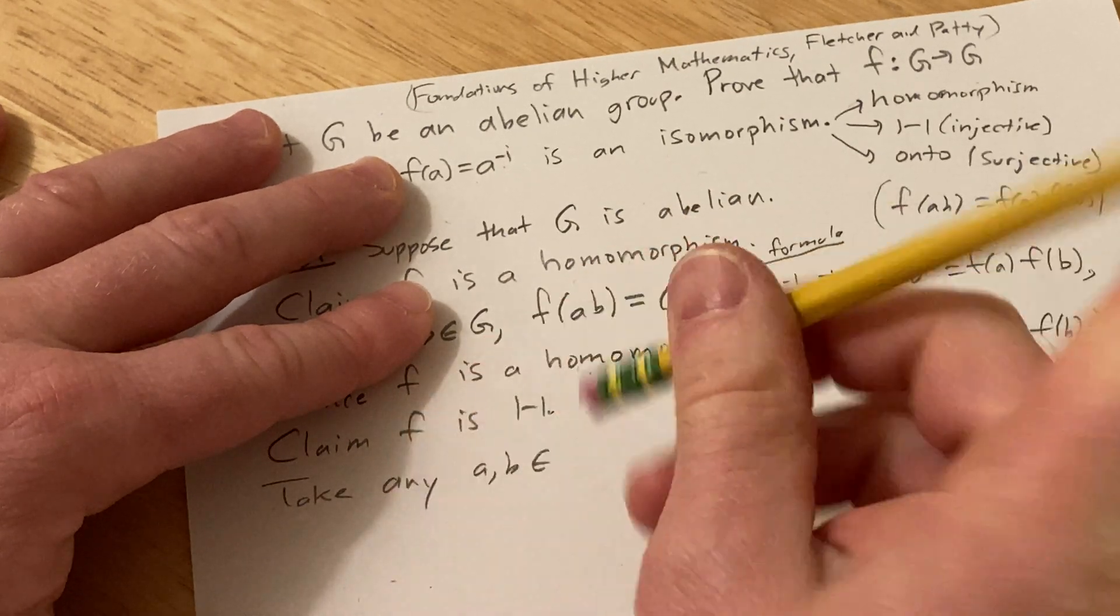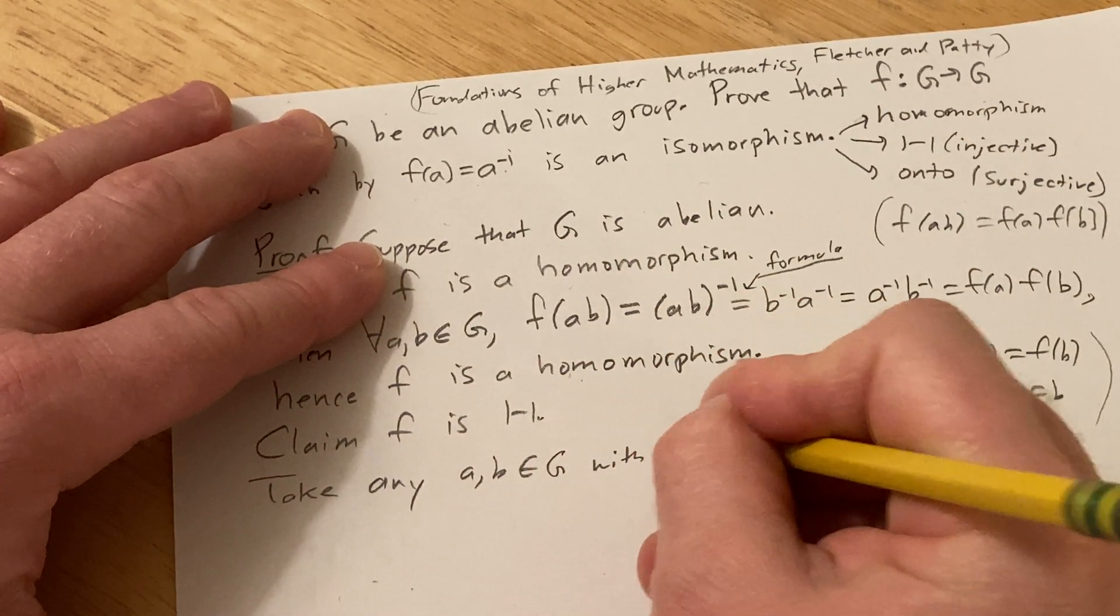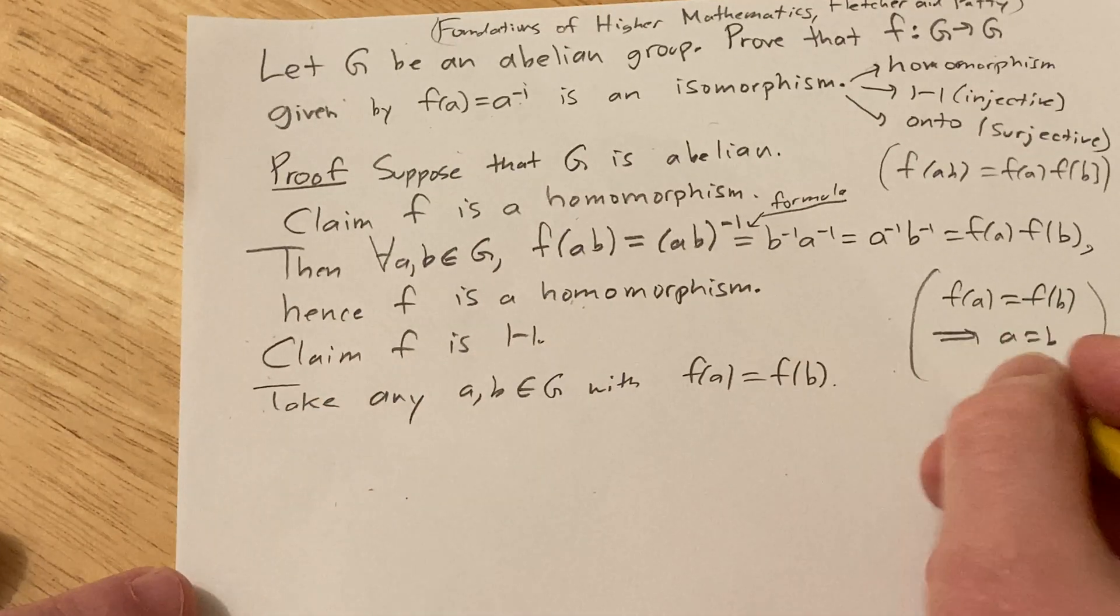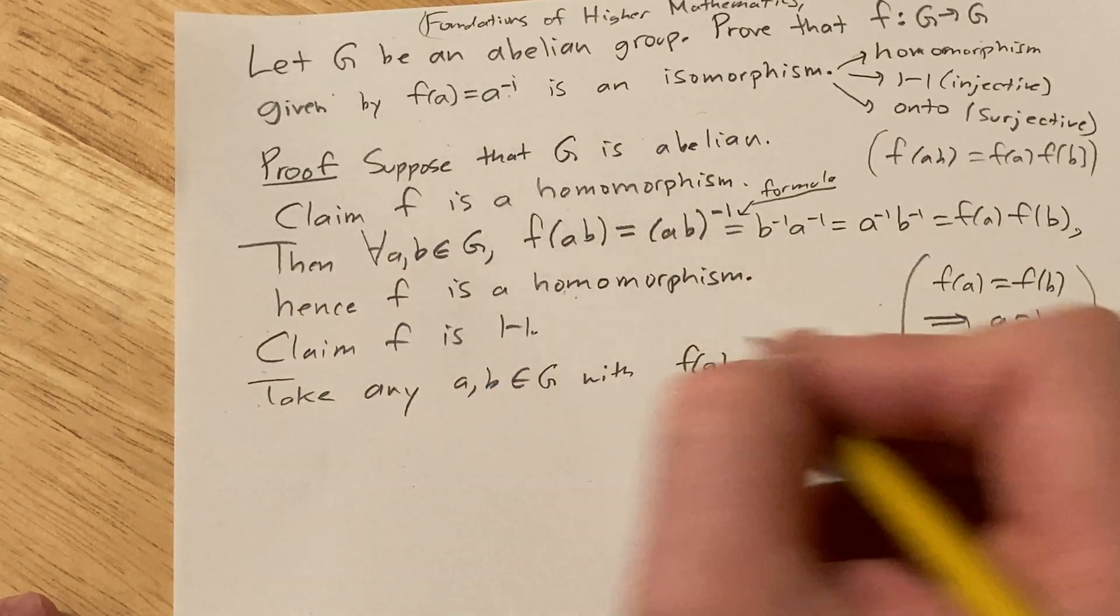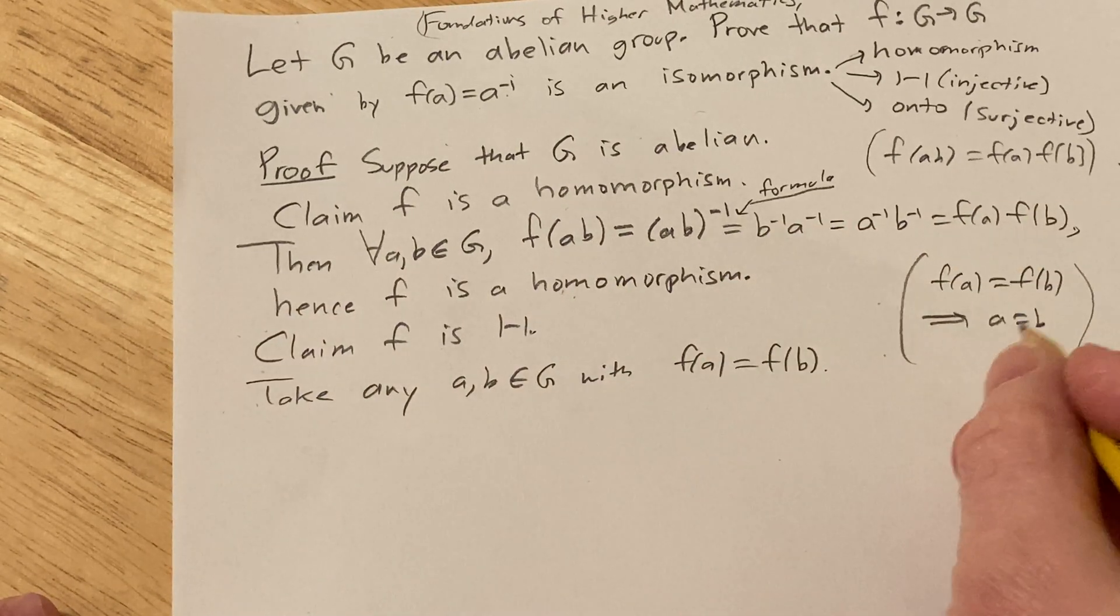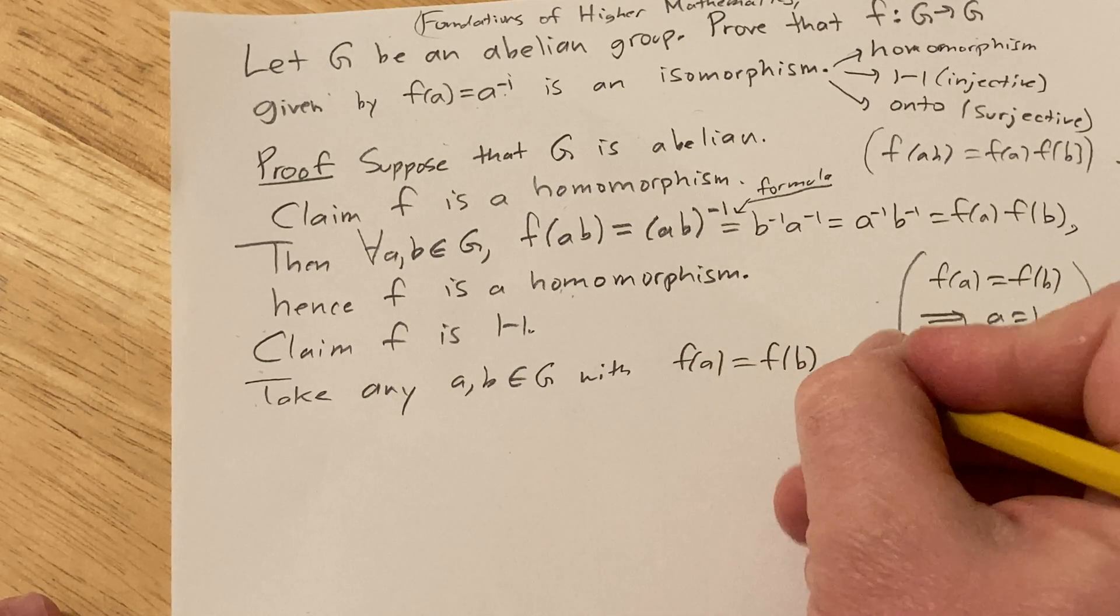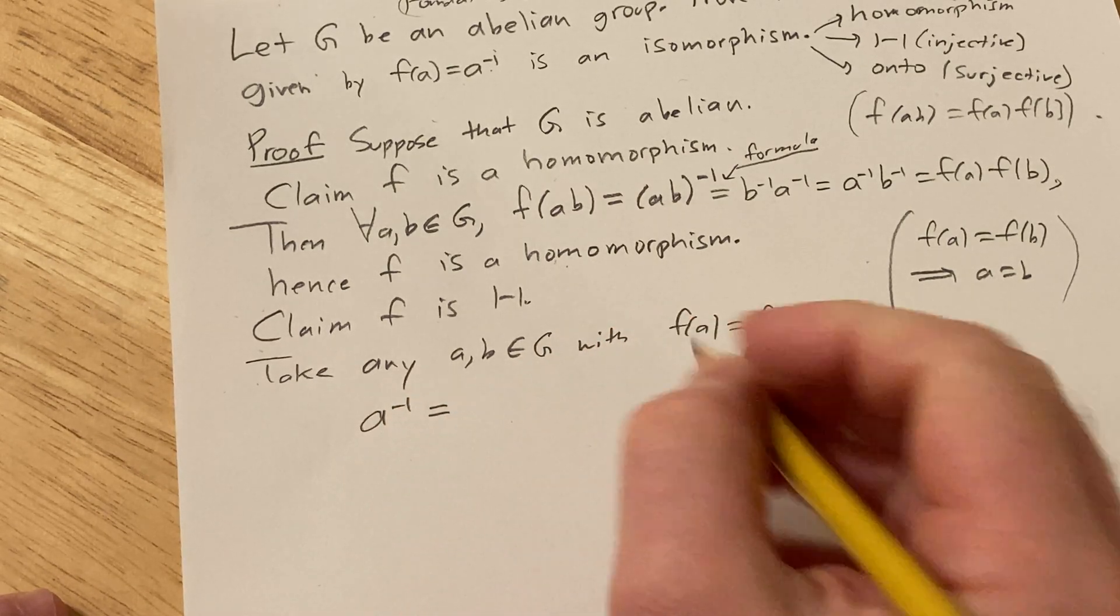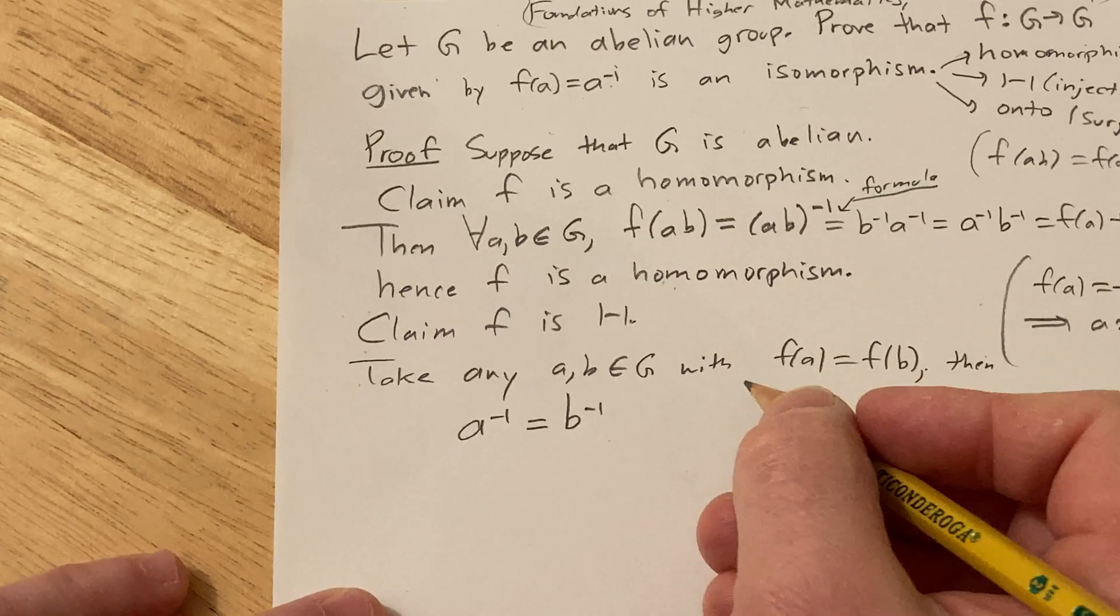Well let me just say yeah, G with f(a) equals f(b). So suppose f(a) is equal to f(b) for a and b in G. So whenever this is true for a, b in G we have to show that a is equal to b. So what's f(a)? So then we have that a inverse is equal to b inverse. Right? So now I have to show a is equal to b.